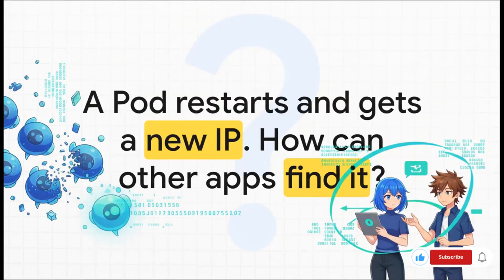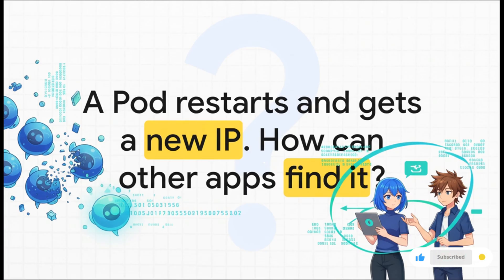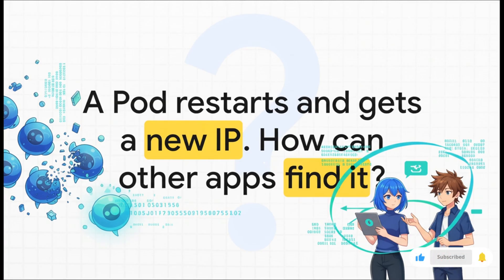But this creates our first big problem. Pods are what we call ephemeral — just a fancy way of saying they're temporary. They can be destroyed and replaced at any second. And when a new pod spins up to replace an old one, it gets a completely new IP address. So how are other parts of your app supposed to find it and talk to it if its address is always changing?